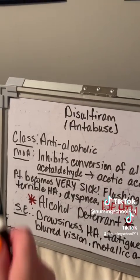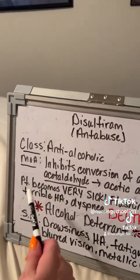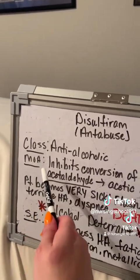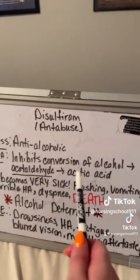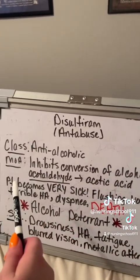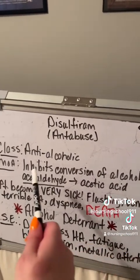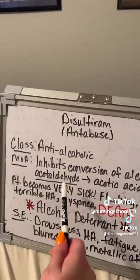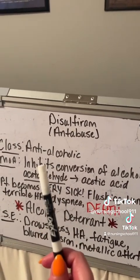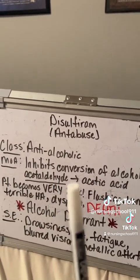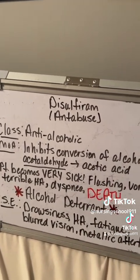To the handy whiteboard. The class of the drug is anti-alcoholic. The mechanism of action is that this drug inhibits the conversion of alcohol into acetaldehyde into acetic acid. Acetaldehyde builds up and builds up within the patient's system to toxic levels if the patient ingests alcohol.